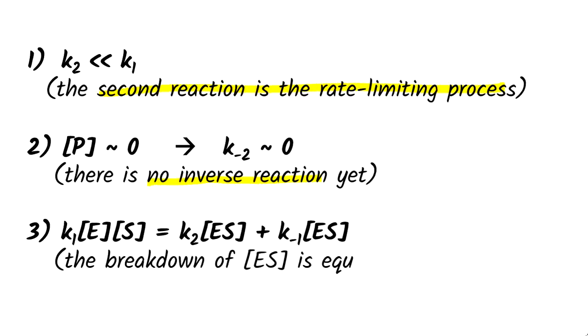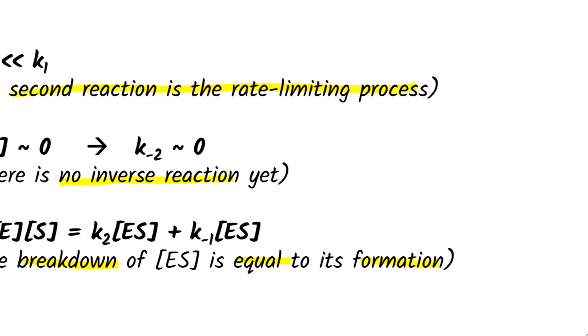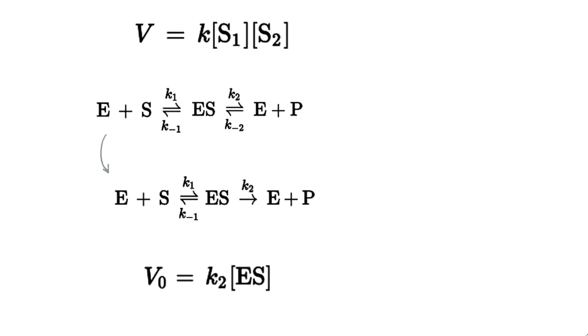The third, the steady state assumption, says that the concentration of ES complex can be regarded as a constant. Since the velocity of a reaction is proportional to the reactant, which in this case is the ES complex, we will conclude that K2 is the rate-limiting constant. That's why we can also call it catalytic constant or turnover number.